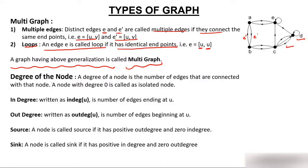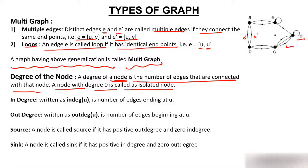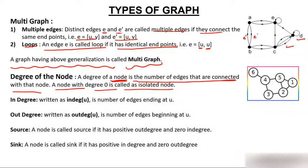The degree of a node is the number of edges connected to that node. For example, degree of node 6 is 1, degree of node 4 is 3, degree of node 5 is 3, and degree of node 1 is 2. A node with zero degree — no connections — is called an isolated node.